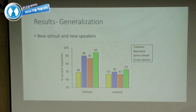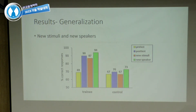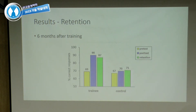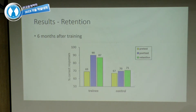We also checked whether training generalized to new stimuli — words never heard before — and to new speakers never encountered before. Again, all differences compared to pre-test were significant, while controls showed no such differences. We then ran a retention test: we brought participants back six months after training. They were still at the same level — they did not go down at all, staying as good as they were directly after training. Controls showed no change.